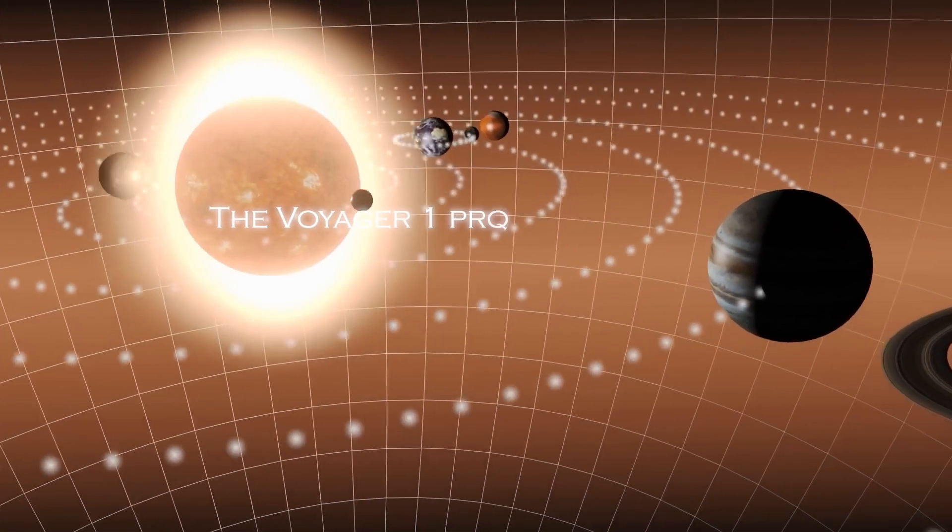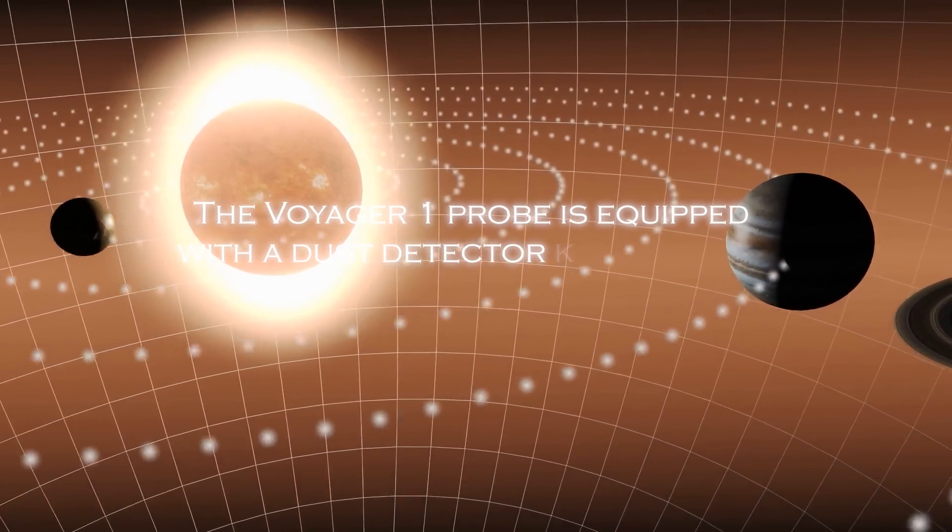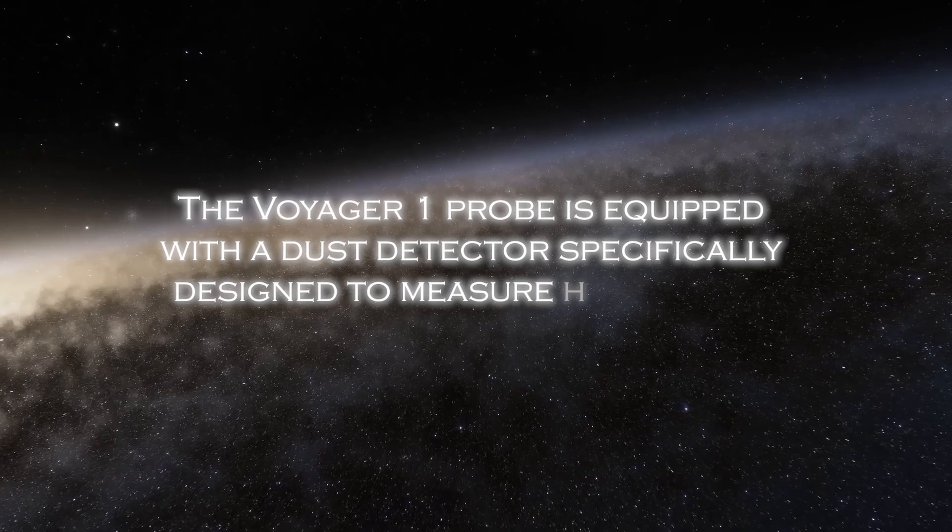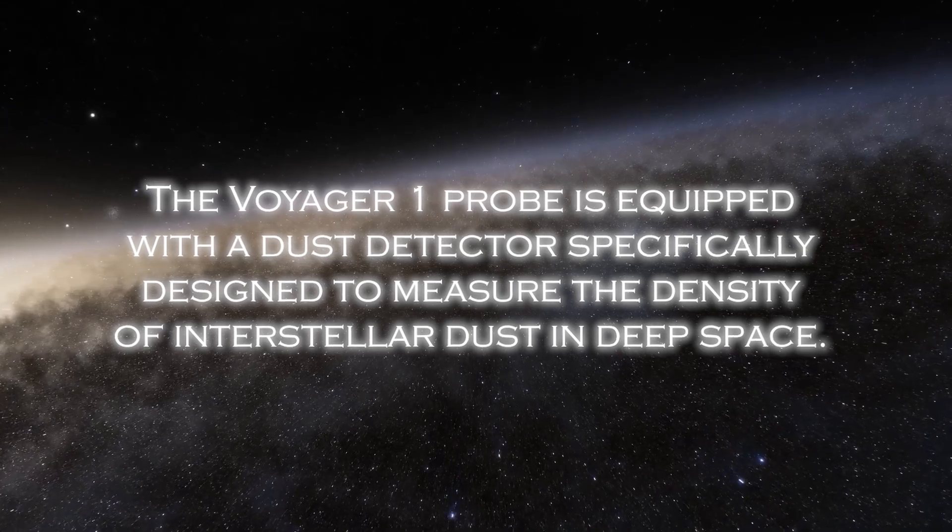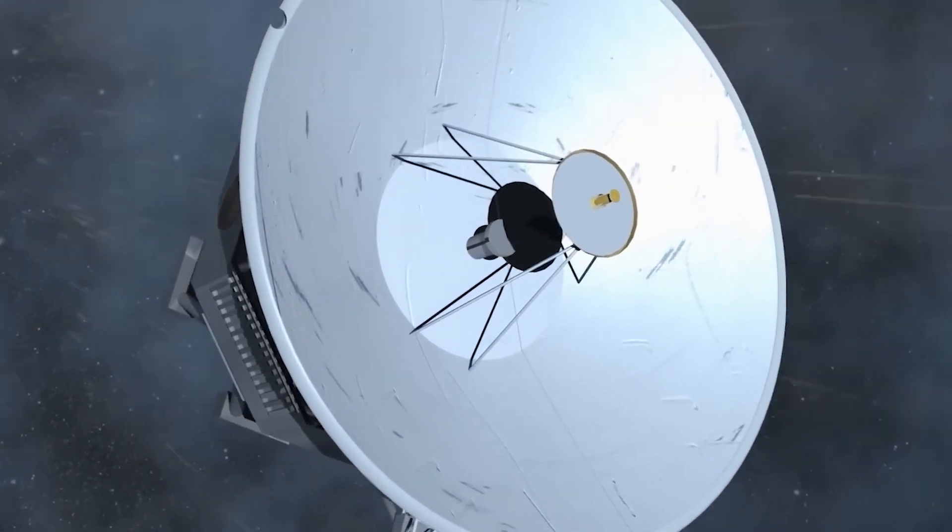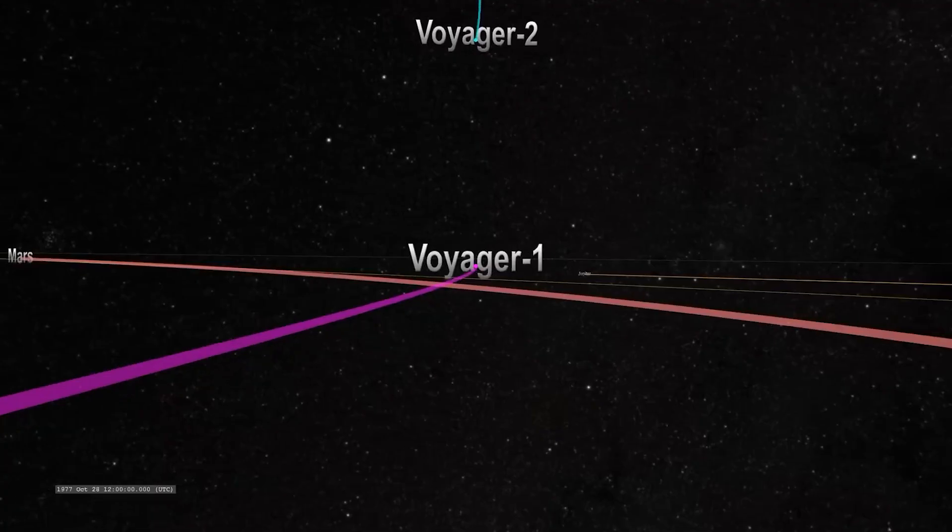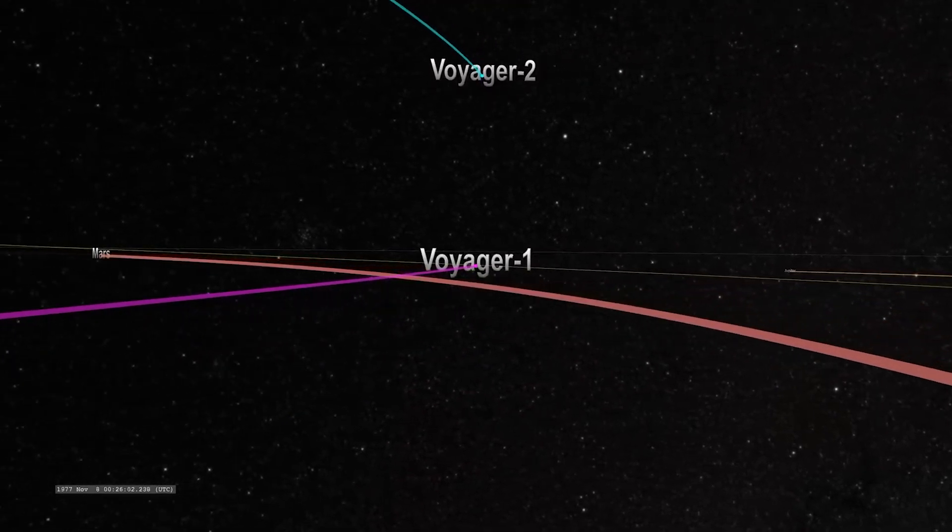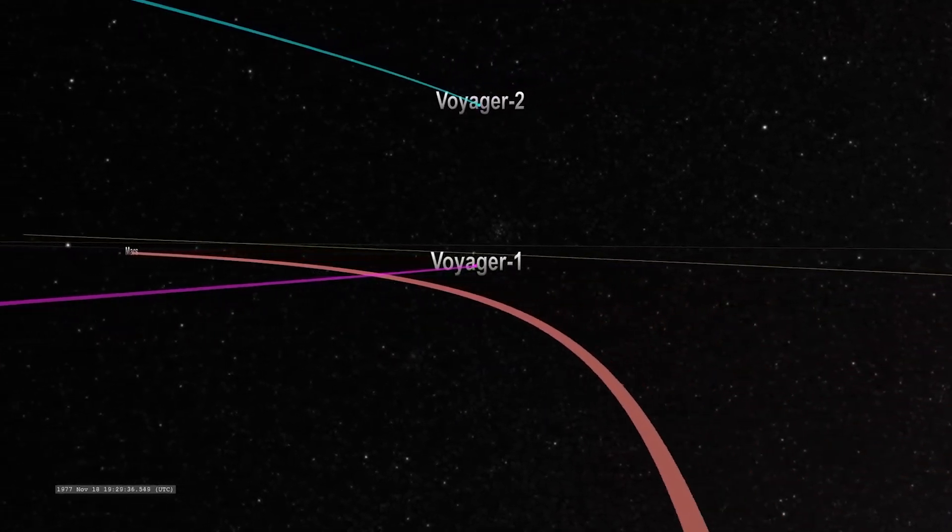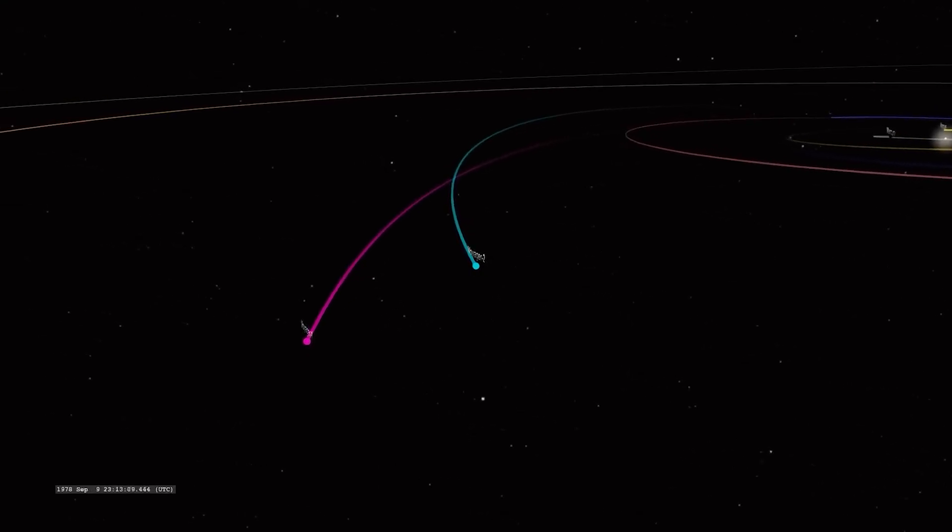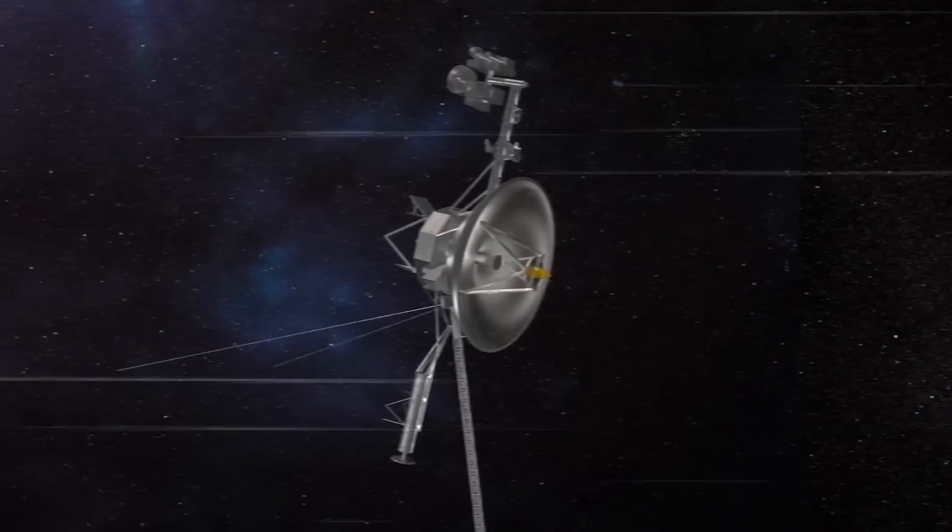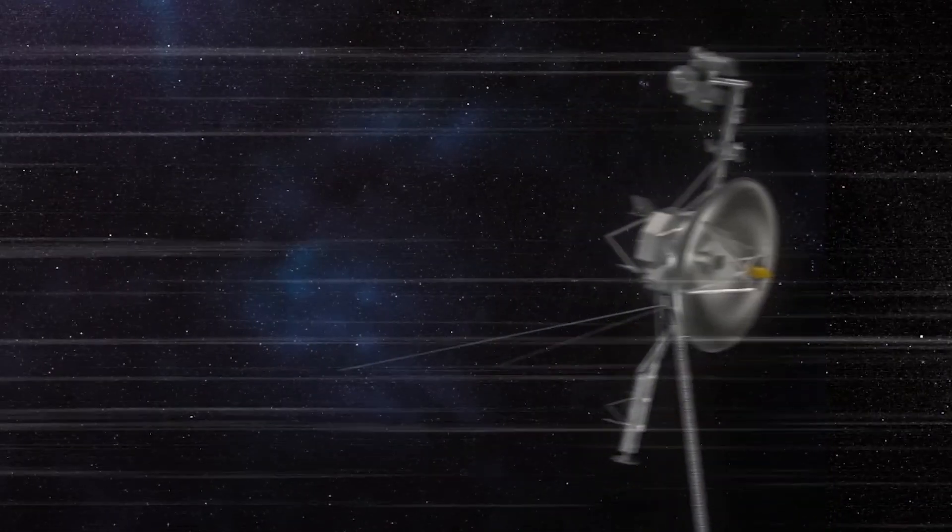The Voyager 1 probe is equipped with dust detectors, specifically designed to measure the density of interstellar dust in deep space. However, communication with Voyager 1 has become more difficult due to the limited resources NASA's global antenna system has to receive the mission signals. This has resulted in less frequent communication opportunities than they used to be.